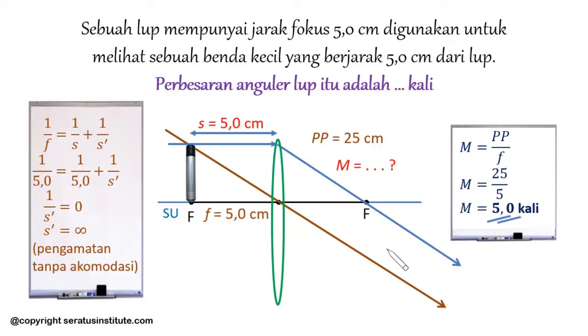How about it Sobat 100? Very easy right? So remember carefully. If in the problem the object distance is given, and the focal length of the magnifying glass is given, first Sobat 100 use the general lens formula to determine where the image is located. The image location determines what type of observation it is. If the observation is without accommodation, to determine the angular magnification of the magnifying glass, Sobat 100 use this formula: M equals PP divided by f. Sobat 100 enter the numbers, and you'll get the angular magnification of the magnifying glass. Understand, Sobat 100?